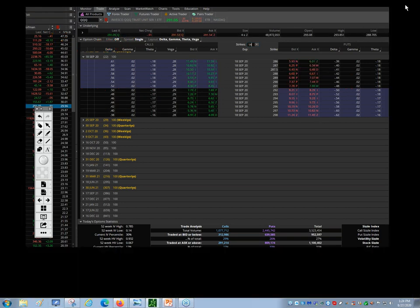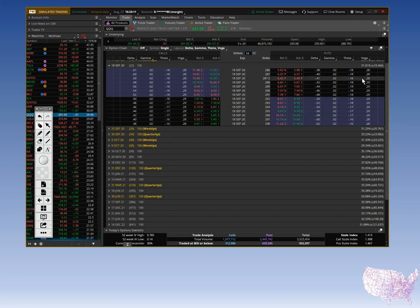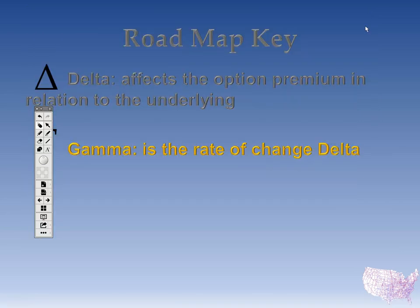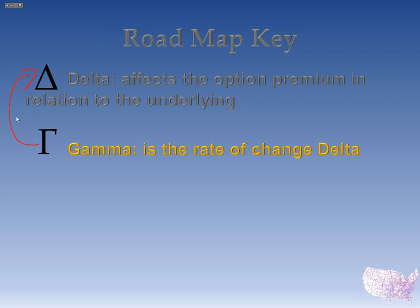Pretty simple so far. Gamma — the easiest thing to remember is that Gamma goes with Delta. It basically adds into Delta. We talked about Delta being the first dollar move — well, this is dollar number two where Gamma comes into consideration. On that second dollar move, Gamma starts going into the Delta.